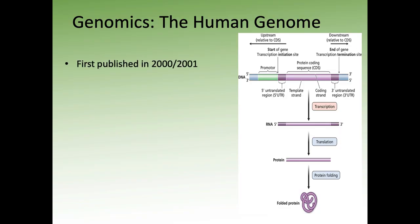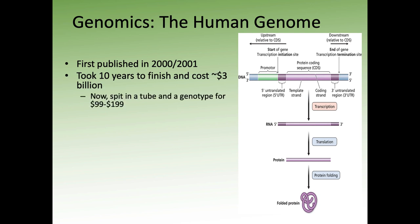The human genome was first published in 2001 but took about 10 years to finish and cost about $3 billion. If we think about where we are now, you can basically spit in a tube and get a genotype for about $100 to $200 — 23andMe, Ancestry DNA, whatever you want. You can get your full genome sequence for something around $800 to $1,000.